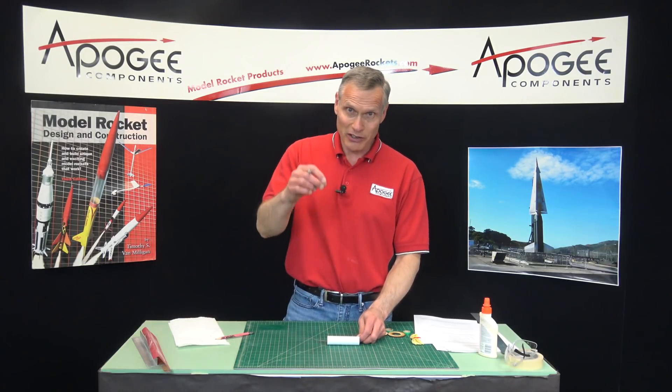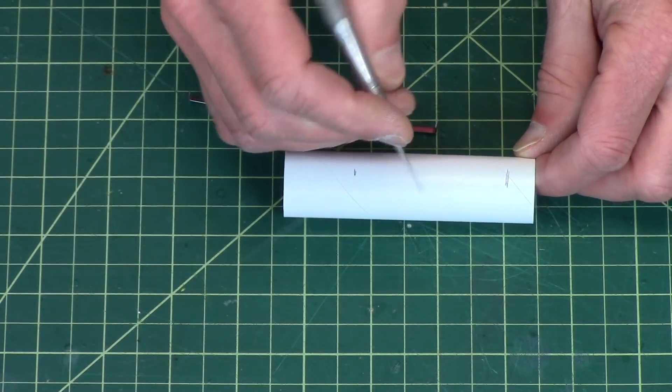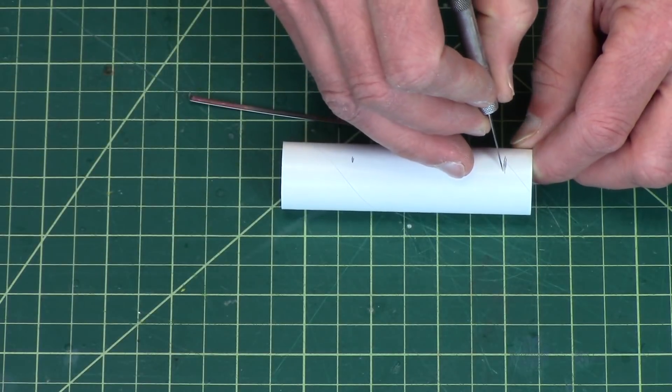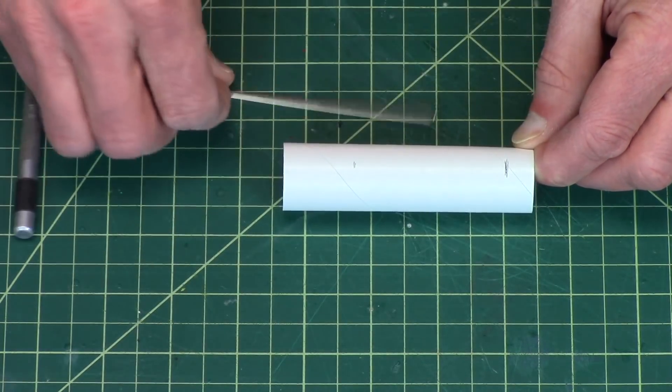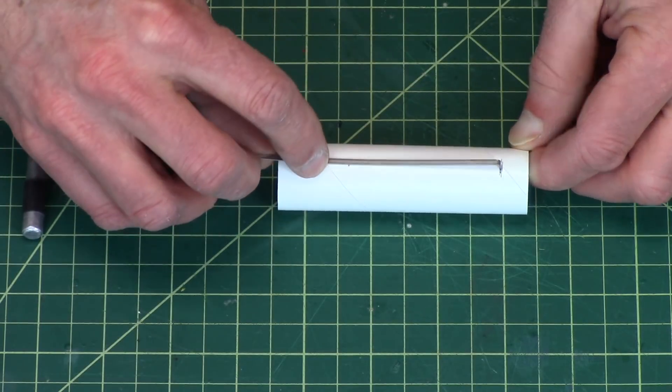Then we're going to take a hobby knife and we're just going to plunge it into the tube and make a little slot for our engine hook, and that engine hook will go in there just like that.